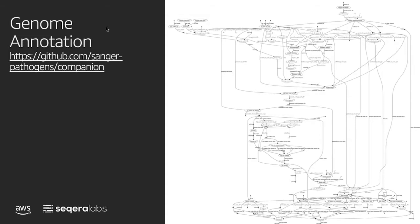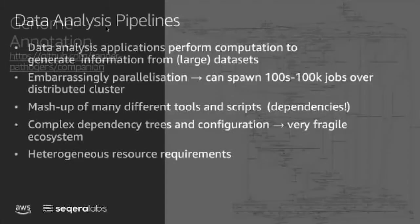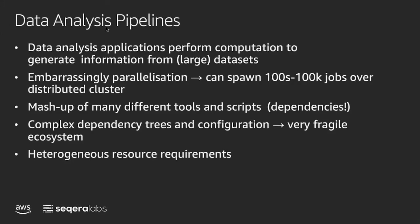When we were creating Nextflow back in 2013, we stumbled across some common elements that were part of data analysis pipelines. The kind of data we're dealing with, particularly in genomics and life sciences, is increasing very rapidly. We're able to split that data up and run these analyses in a distributed manner across a cluster or in the cloud. We have a mashup of different tools — that pipeline I showed you was made up of something like 70 different scripts — and therefore all the dependencies and resource differences associated with each tool become very difficult to manage.